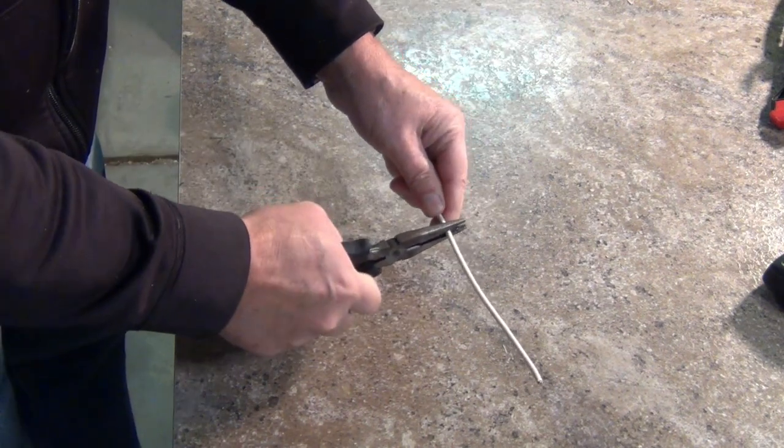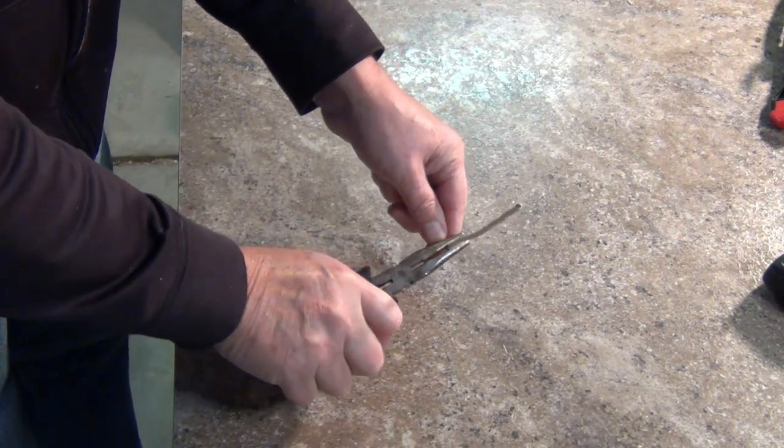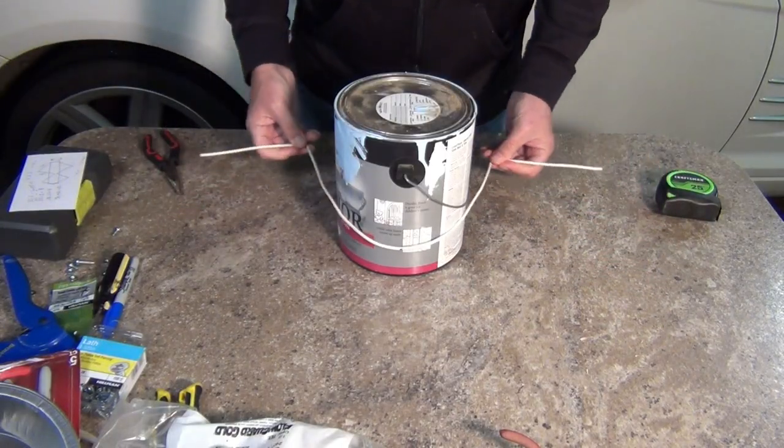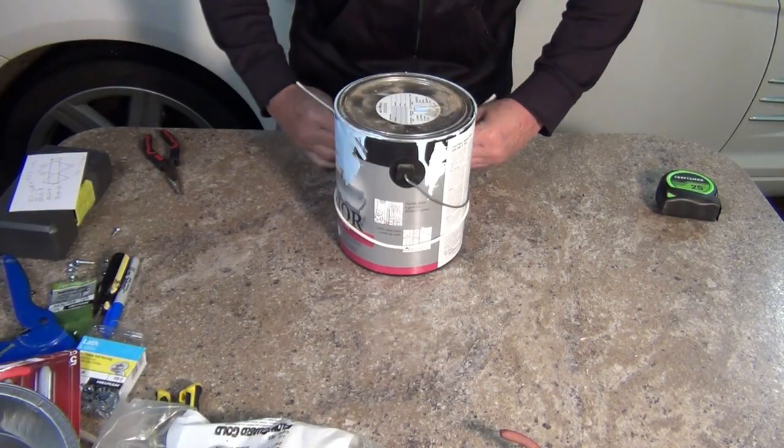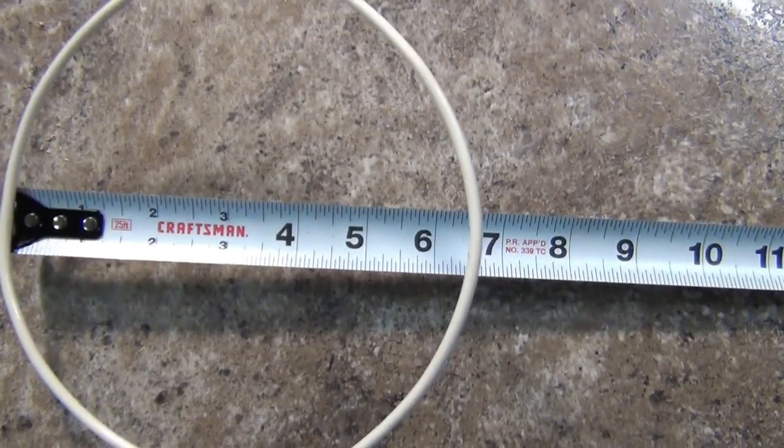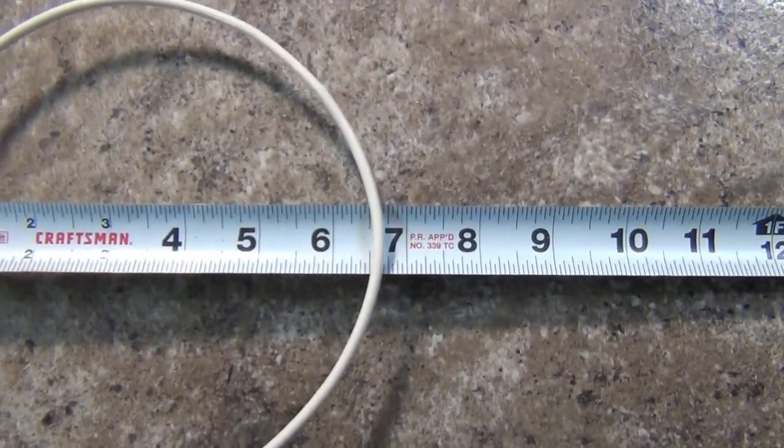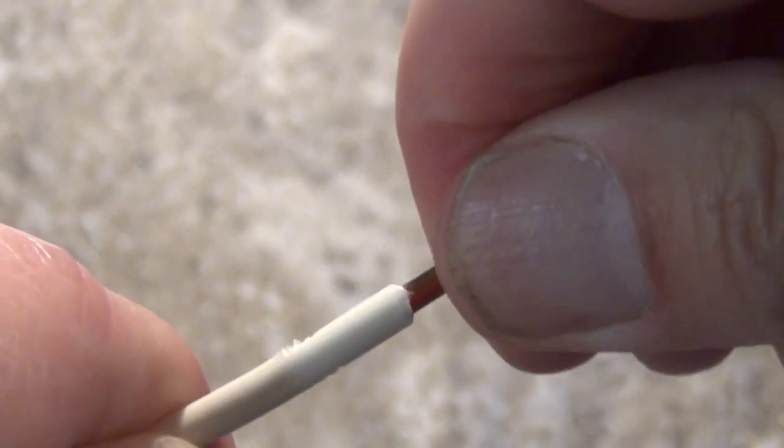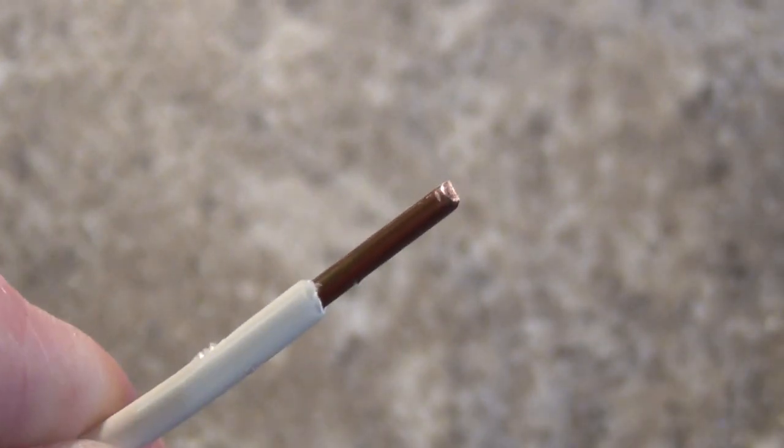Now using a paint can, bend the middle 20 inches of wire into a rough loop as shown. When held together you should have a loop that measures about six and a half inches in diameter. Strip off three quarters of an inch of insulation from each end.